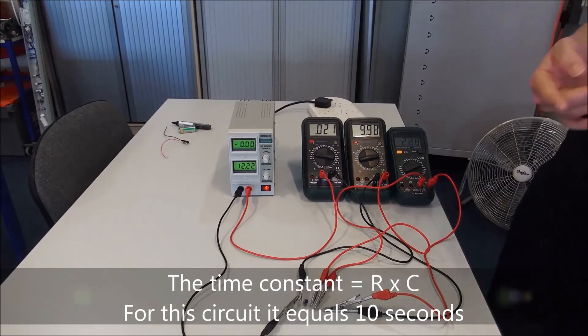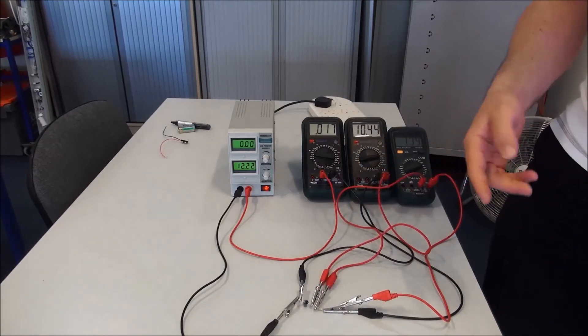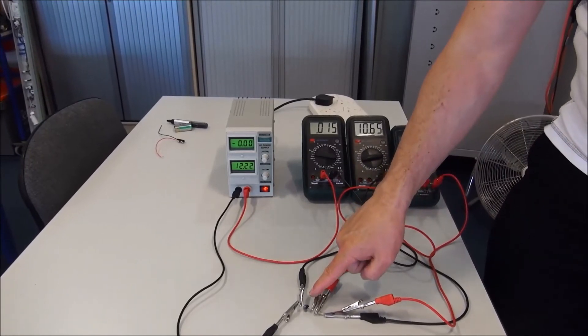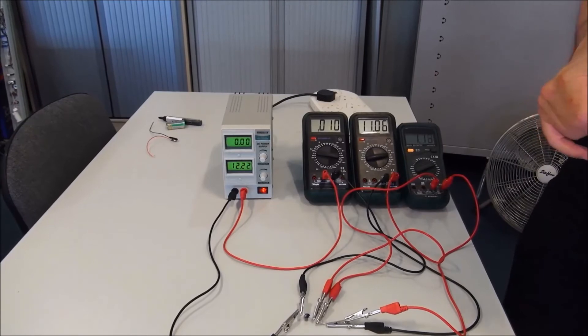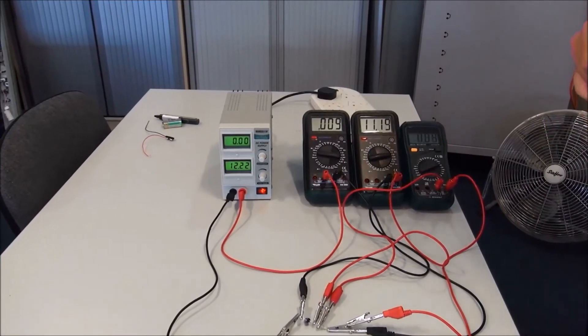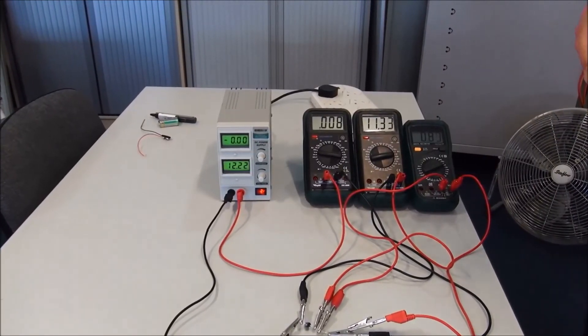Remember, your time constant of the circuit: 100 microfarad capacitor, 100,000 ohm resistor gives a time constant of 10 seconds. 5 time constants to fully charge.